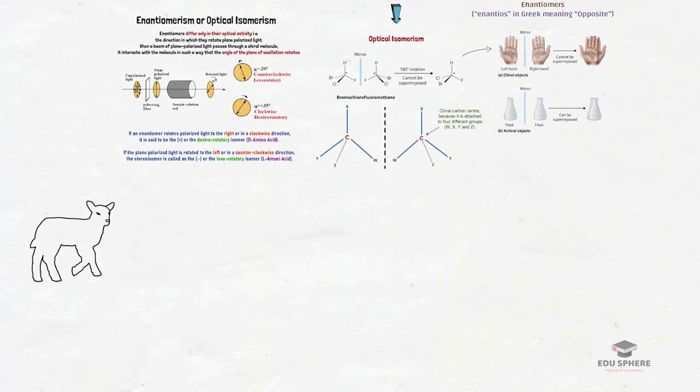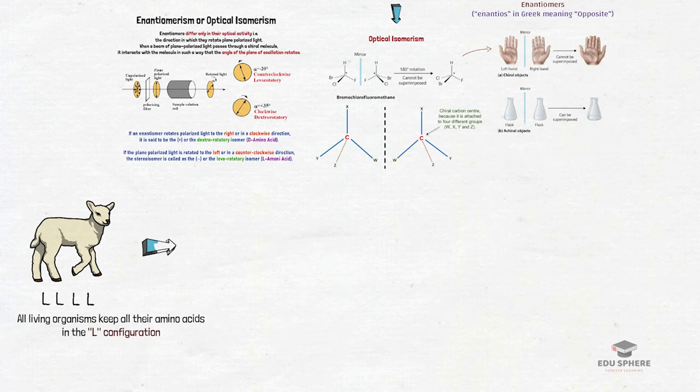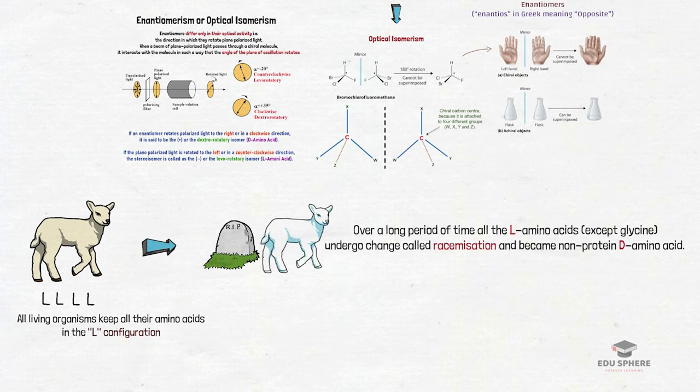With a few important exceptions, living organisms keep all the amino acids in L configuration. When an organism dies, control over the configuration of amino acids ceases. And over a long period of time, all the amino acids undergo change called racemization and they become non-protein D-amino acid.